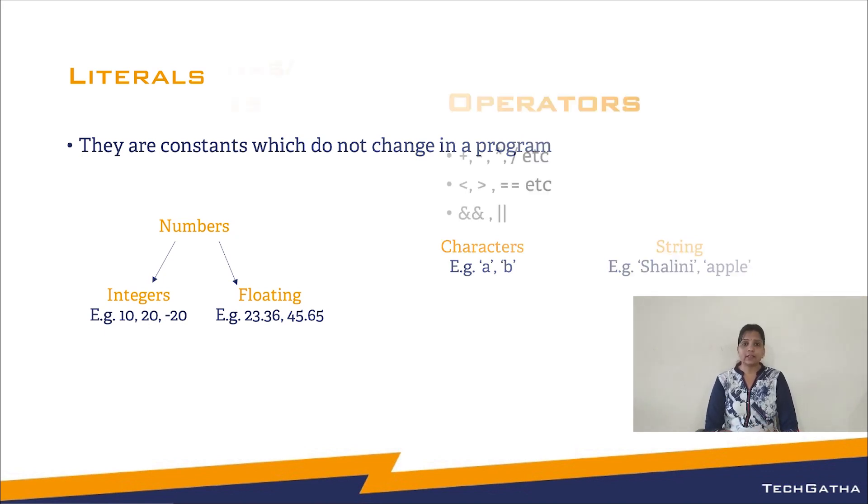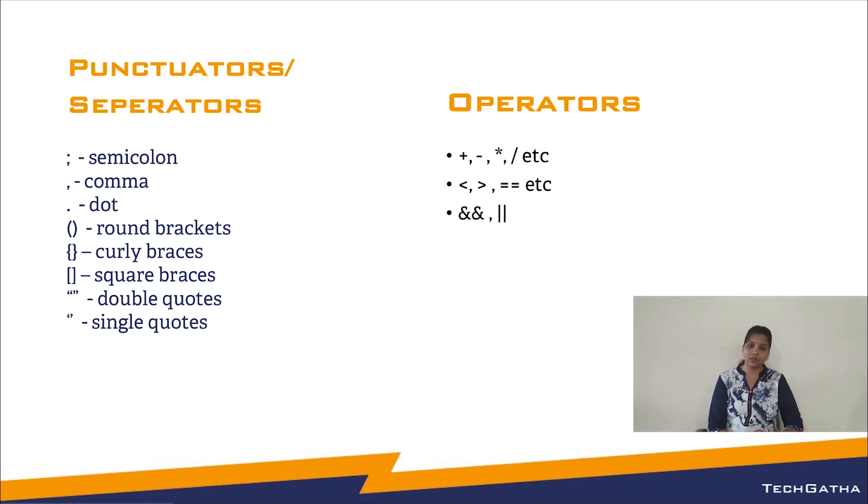The next tokens are punctuators or separators and operators. These are all about the various symbols that you use in a program to complete an expression or a statement or mark blocks of code. As we go on in the sessions, we will be using all of these punctuators and operators.